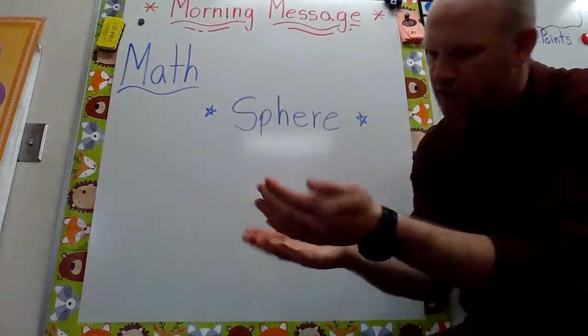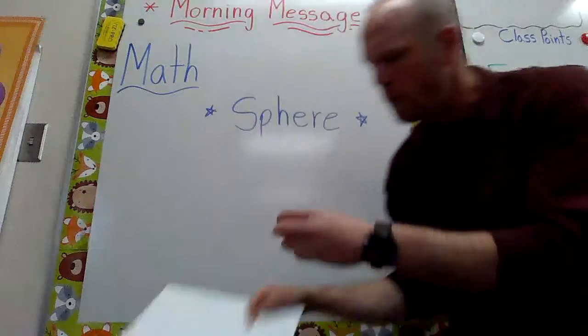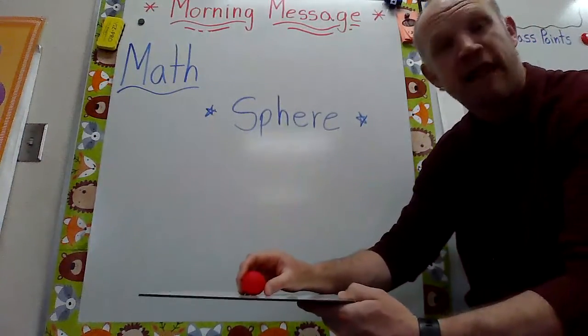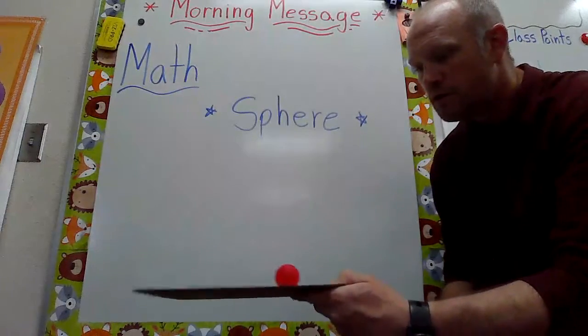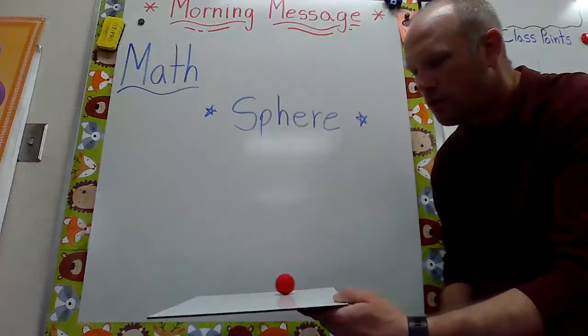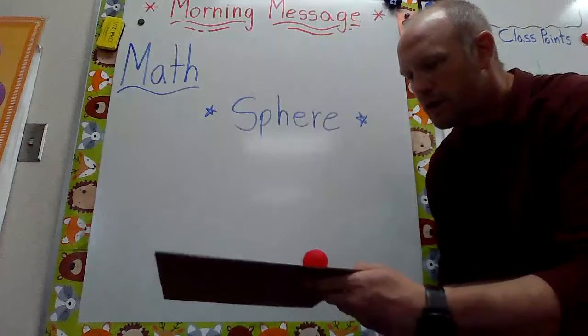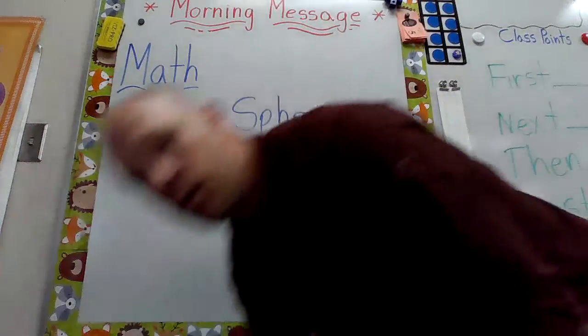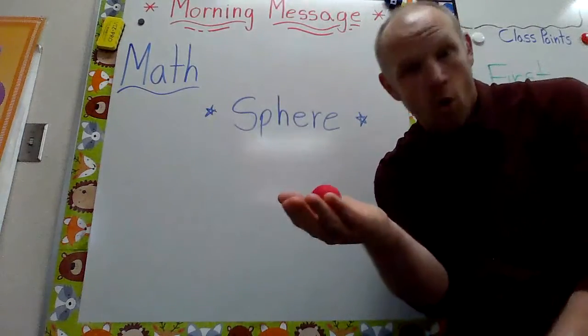Now another way to look at a sphere, and we talked about this before, if we set a sphere maybe on a book or a flat surface it rolls, it doesn't stay in place. So your sphere boys and girls rolls.